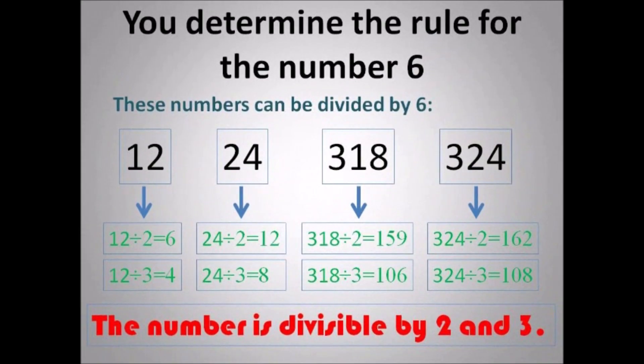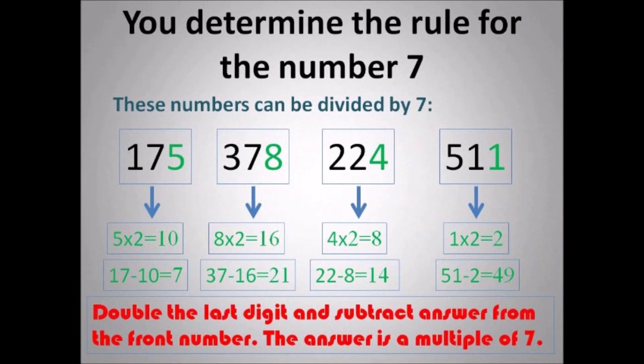For 6, the number is divisible by 2 and 3. So the number is able to be divided by 2 as well as by 3. And once that fits the number, the number is divisible by 6. So it has to be able to be divided by 2 and 3.